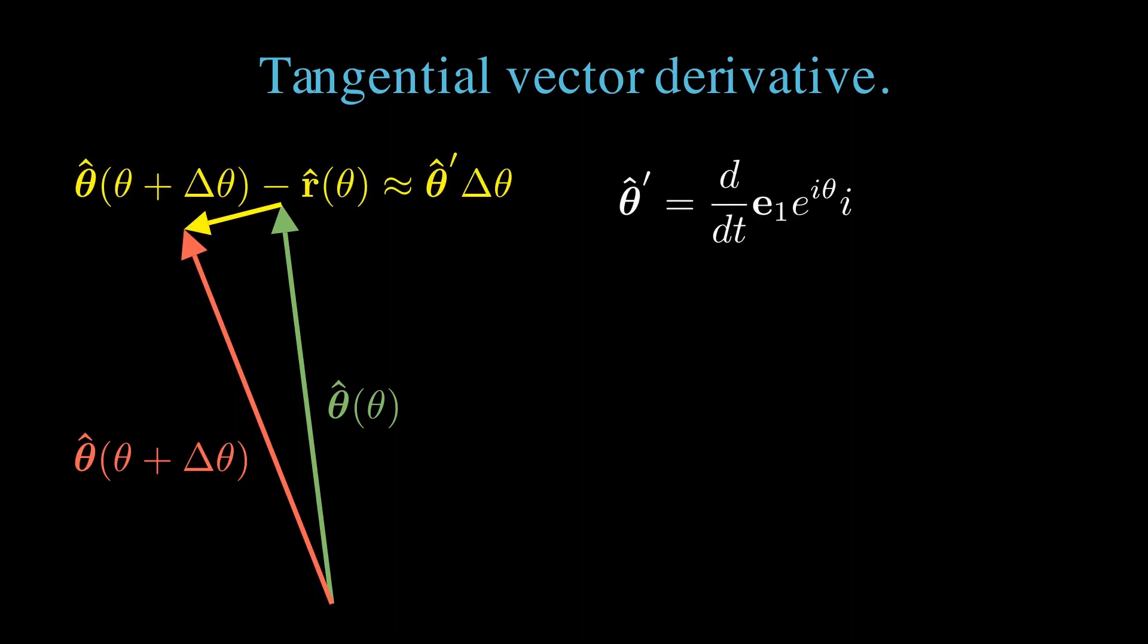We write theta hat as r hat i, then take the derivative. This brings down a factor of i theta prime. i squared is minus 1, leaving us with minus r hat theta prime. Again, we write omega as d theta dt. So we're left with theta hat prime equals minus omega r hat.